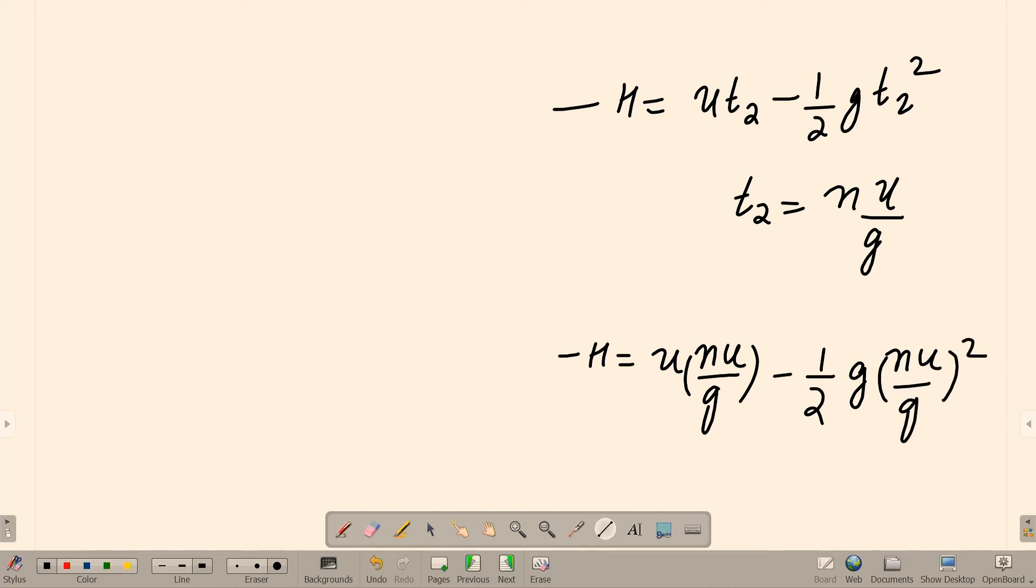Let us do this math and finally come to an expression. We have to match with any one of the option actually. It is the final relationship. Minus H is equal to U square N by G, then minus 1 by 2 G N square U square by G square.